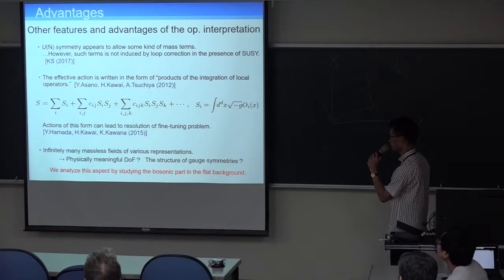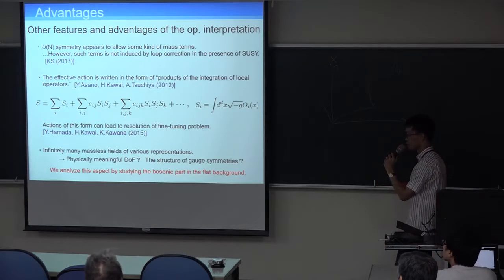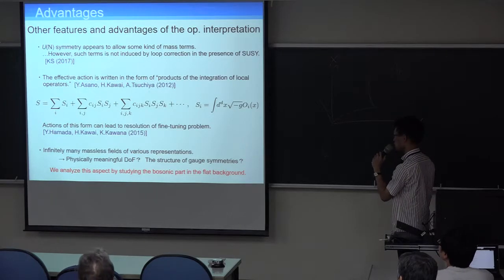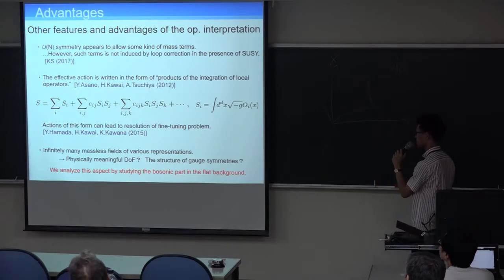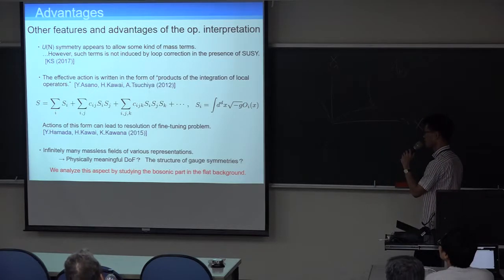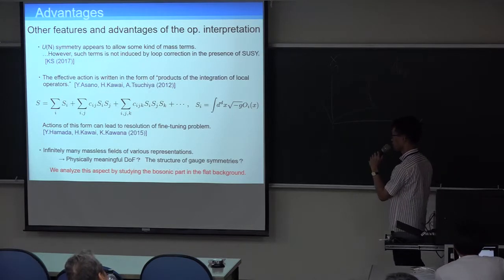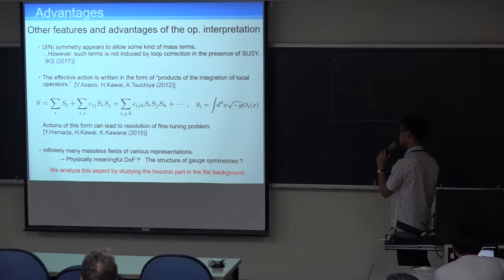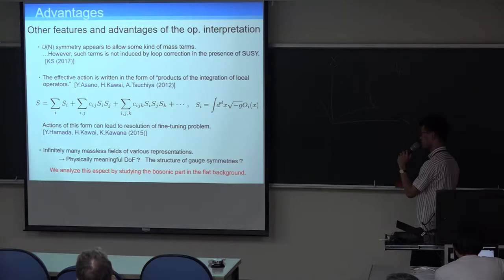Other features are listed here. For example, the effective action is written in the form of multilateral action mentioned in Kawai-san's talk. But the most relevant feature in my talk is the last one. There are infinitely many massless fields of various representations. But the corresponding gauge symmetry is very complicated. So it is unclear if they are physically meaningful degrees of freedom.